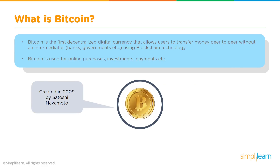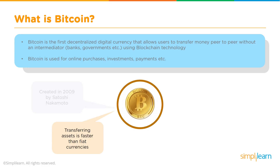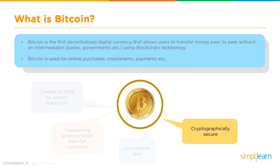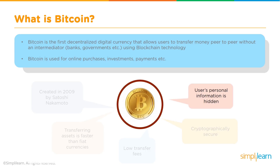Bitcoin was created in 2009 by a person or group of people called Satoshi Nakamoto. Bitcoin helps transfer assets faster than regular fiat currencies with lower transaction fees, because by removing intermediaries the cost of transaction goes down. It is cryptographically secure — it uses cryptography infrastructure so the identities of the sender and receiver are secure, every transaction is cryptographically signed, and user information is also hidden and secure.